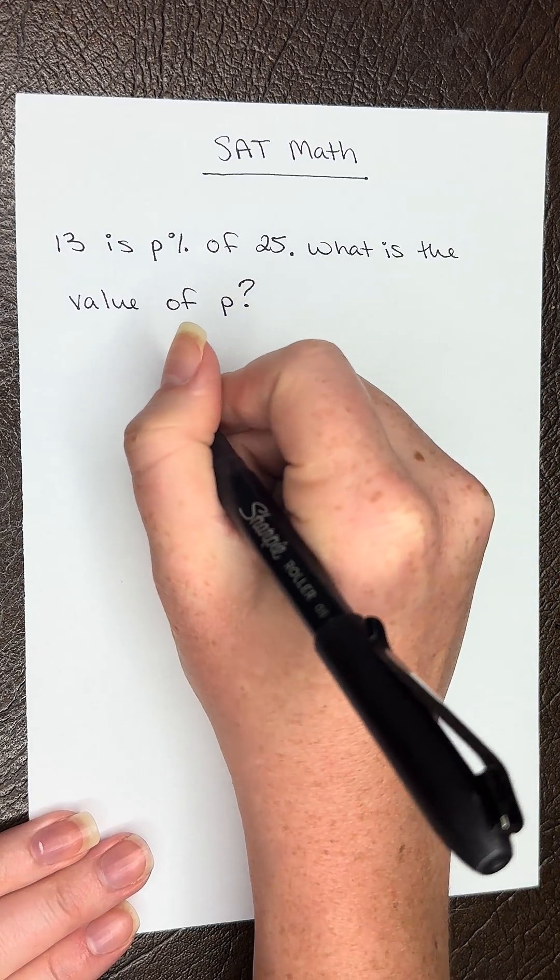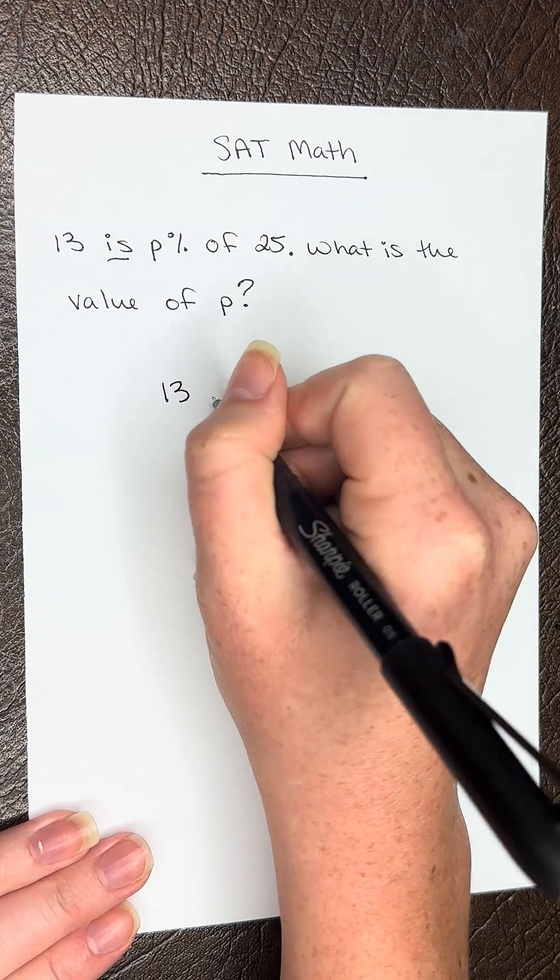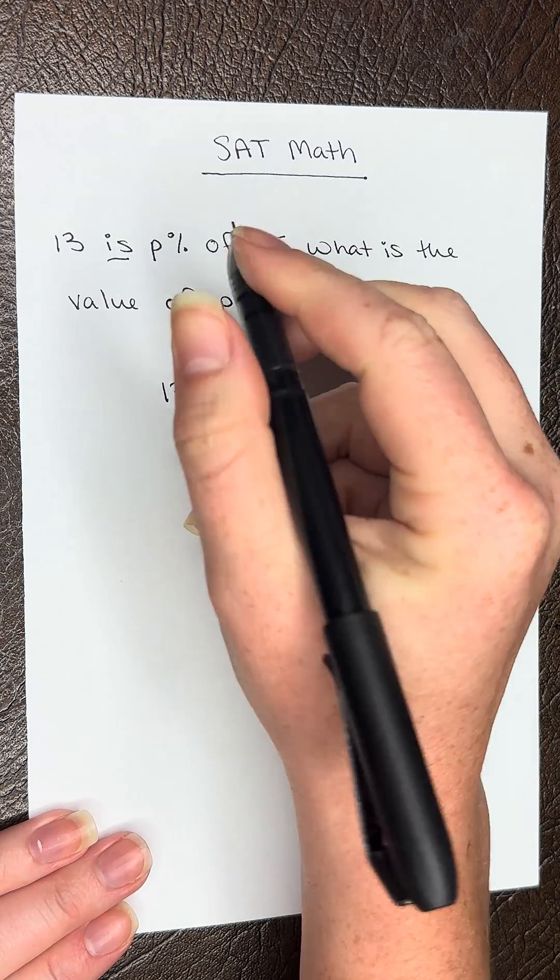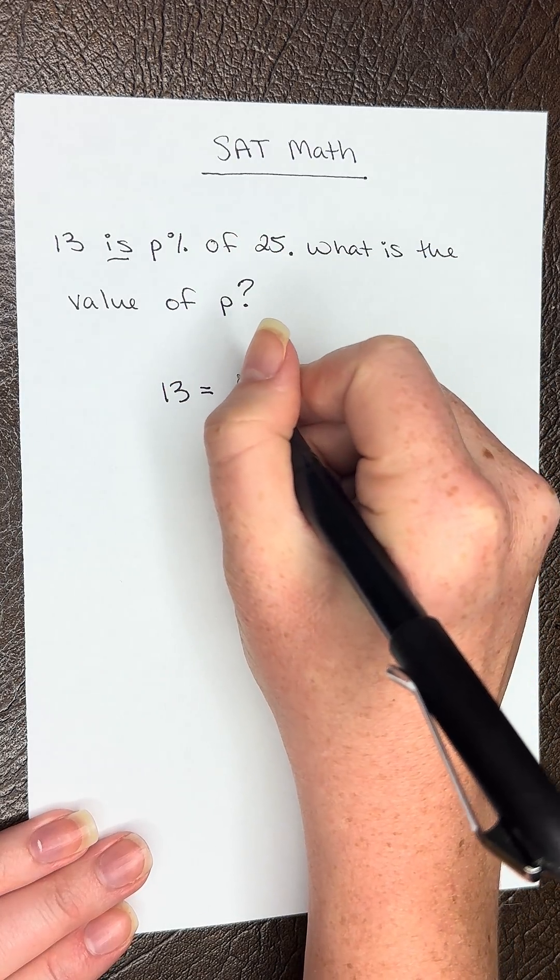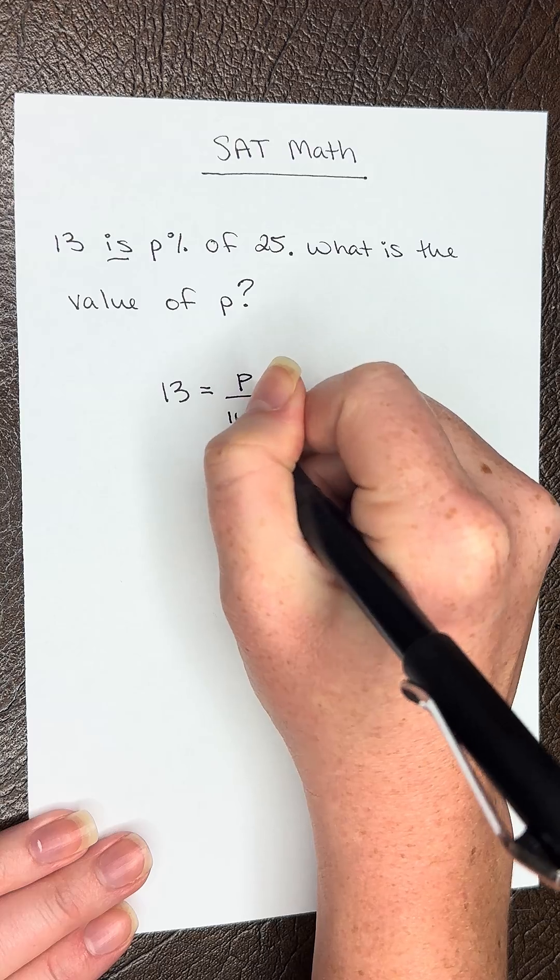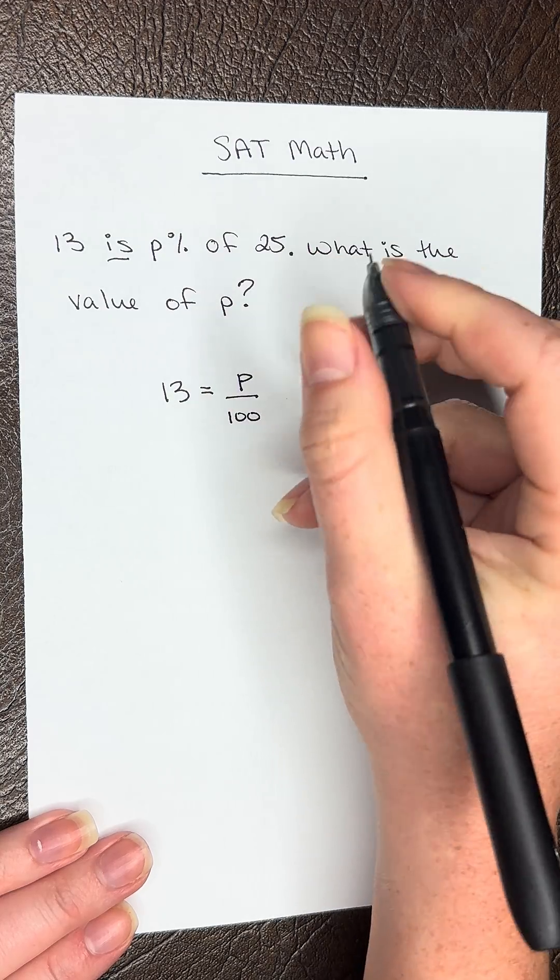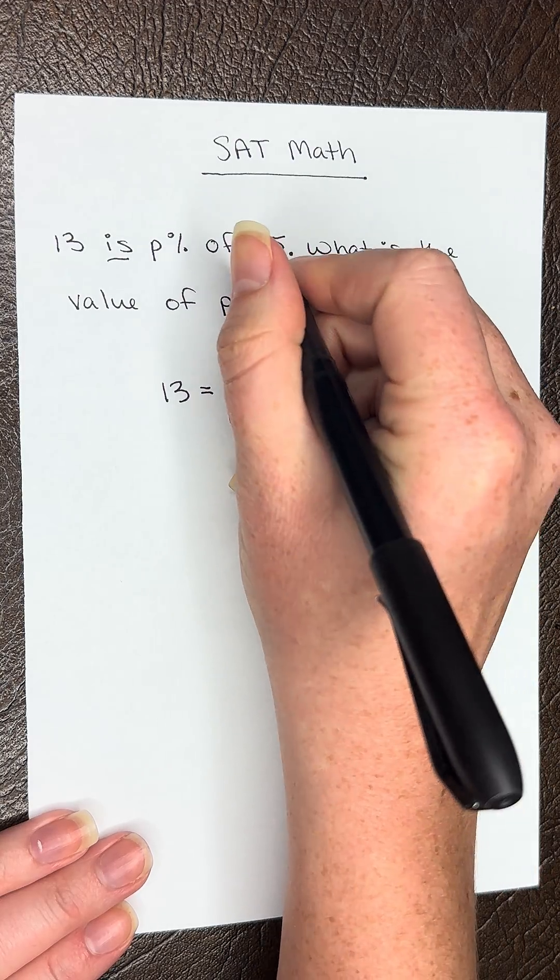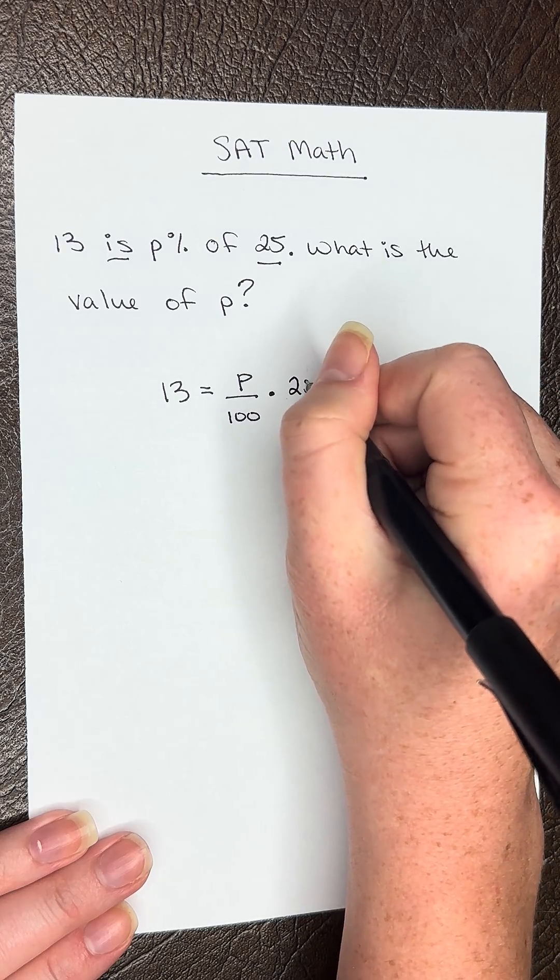So this means that 13 equals, and we're going to set up our P percent. So we have P over 100, and then of times 25. So we're going to write 25 here.